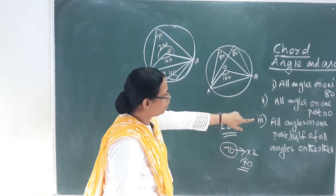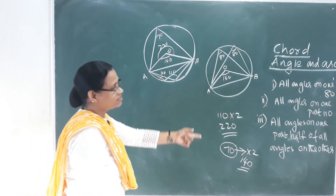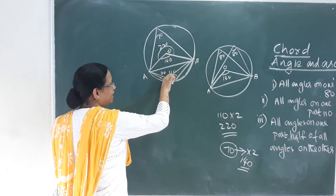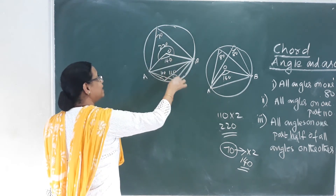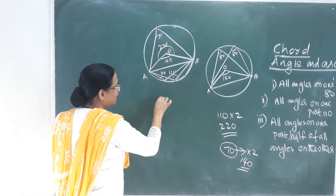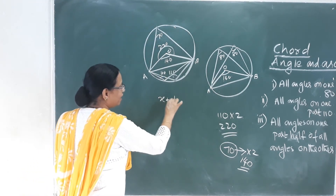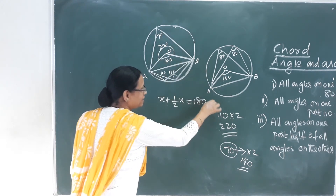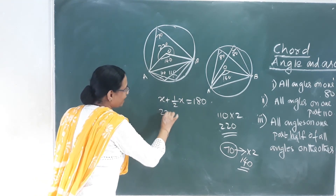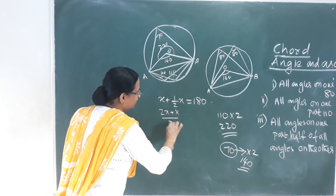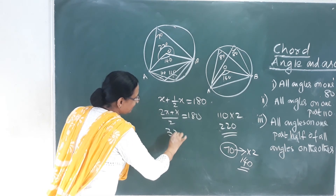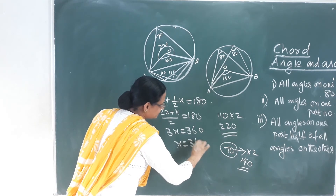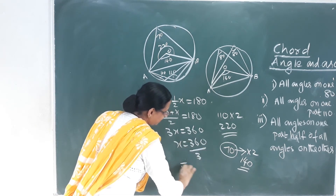For the case where one part's inscribed angle is half of the other part's: let the smaller angle be x and the larger be 2x. Then 2x plus x divided by 2 equals 180. So 3x equals 360, meaning x equals 120 degrees.